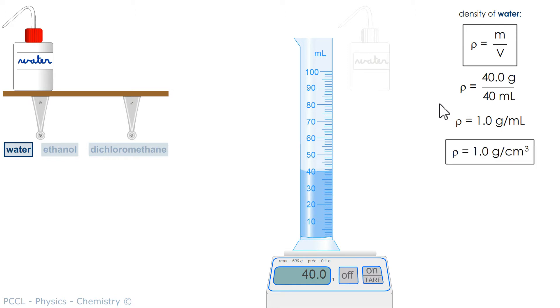For the density in grams per cubic centimeter, I framed it because that's what we generally use. You will see that this is useful for switching from density to relative density.